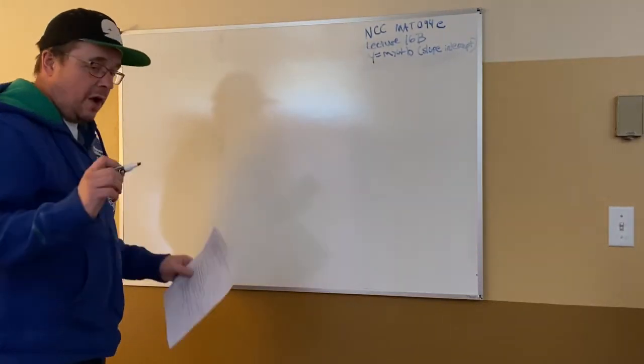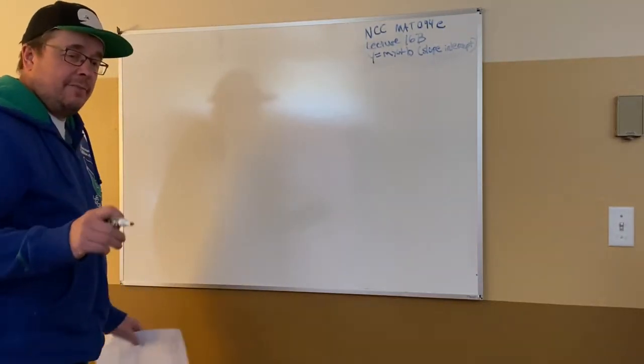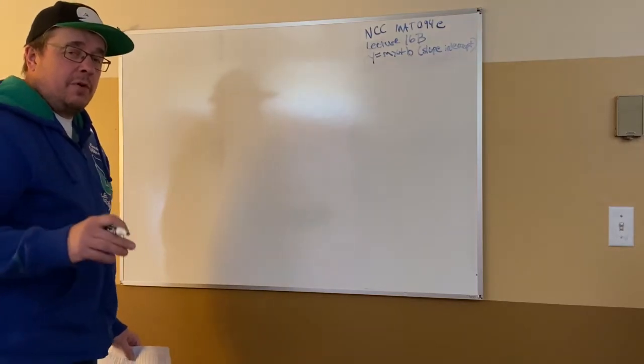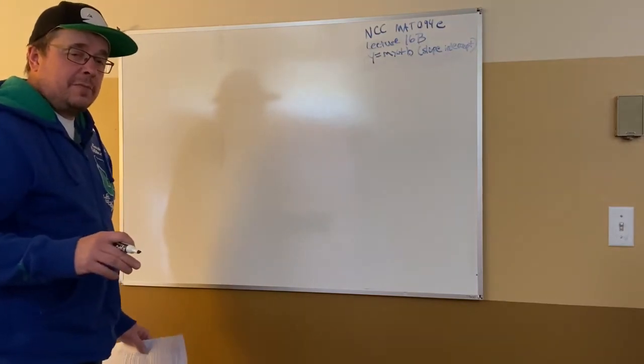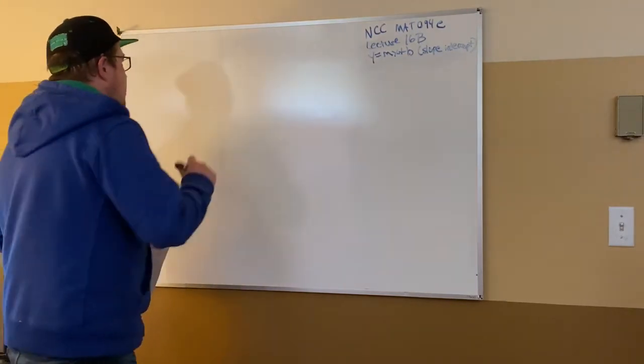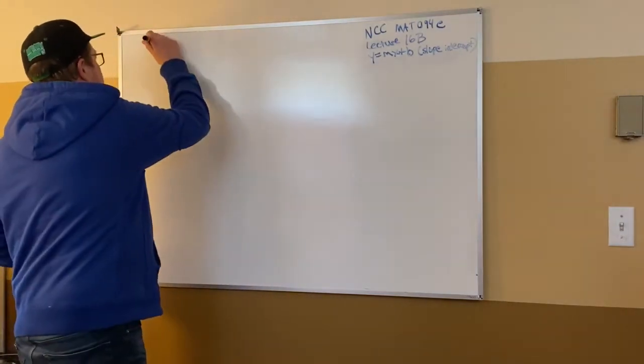So now we're getting into what people call y equals mx plus b, which is the slope-intercept form of a line.